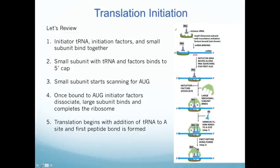To review translation initiation: first, the initiator tRNA, small ribosomal subunit, and initiation factors bind together into an initiation complex. That complex then binds the 5' cap of the mRNA. Once bound, it scans in the 3' direction for the AUG site. Once bound to the AUG, the large ribosomal subunit completes the ribosome with an empty A site. Finally, a new tRNA is added to the A site and the first peptide bond is formed between the P site initiator tRNA and the A site tRNA.